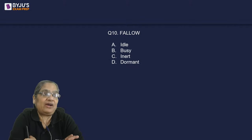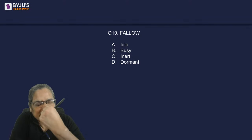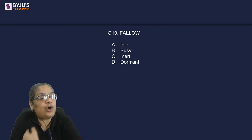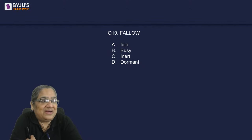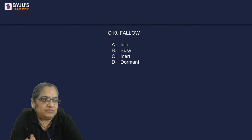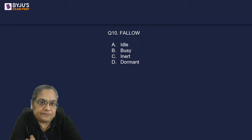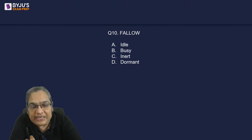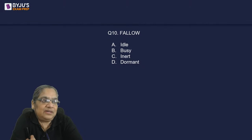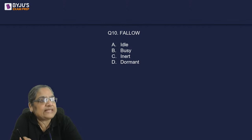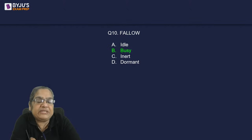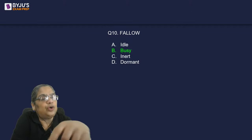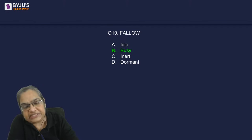Fallow: what is the opposite of fallow? It is used as an adjective to describe land or days — fallow land, fallow days. Fallow means idle; its opposite is busy or active. Idle, inert, and dormant are synonyms of fallow; busy is the opposite.